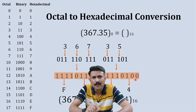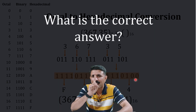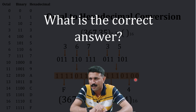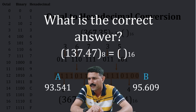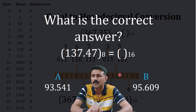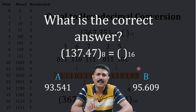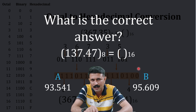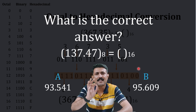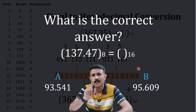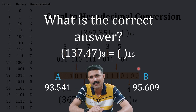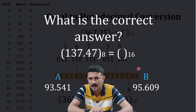Now let's check if you can solve it in 30 seconds. The question on screen is 137.47 in octal — convert it to hexadecimal within 30 seconds. Once you complete the answer, write it in the comments below.